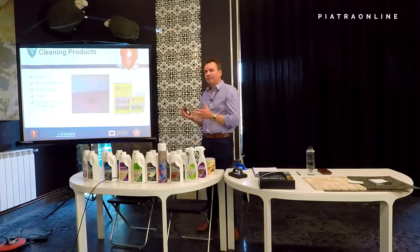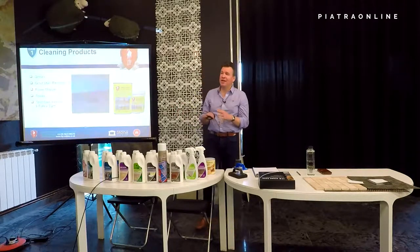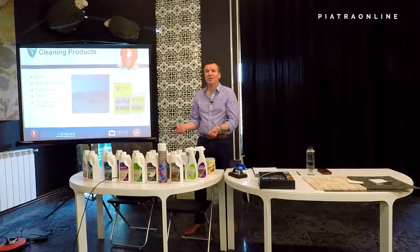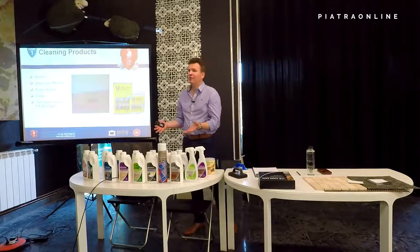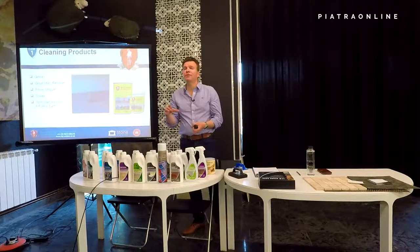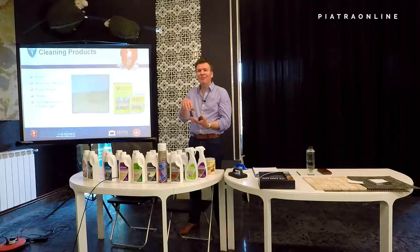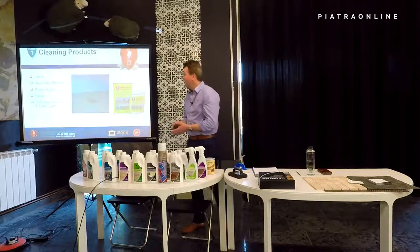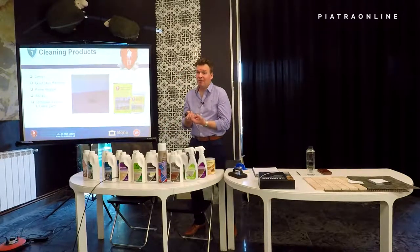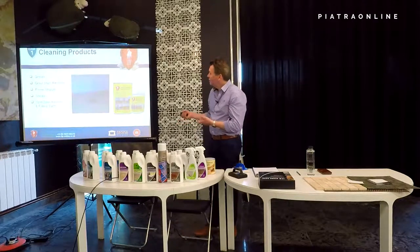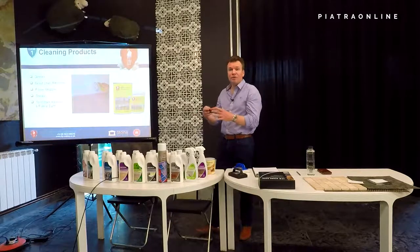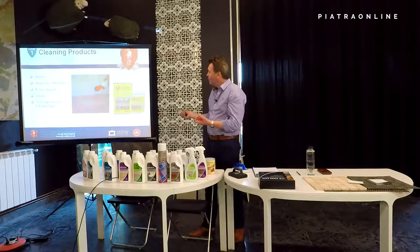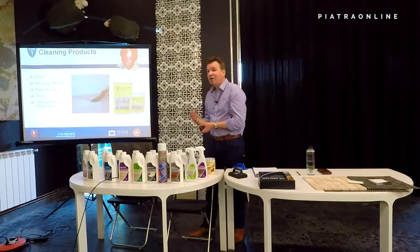Spot Stain Remover and Fuller's Earth are for removing hot oil issues, because there's no sealer on the market that will stop hot oil or grease from absorbing into stone. When you're cooking, oil gets to a very high temperature and that heat is enough to melt through any protection in place. If it happens, try to wipe it up as soon as possible. If you can't, it is possible to extract the oil back out of the stone. You pour the Spot Stain Remover onto the oil stain, allow it to absorb, then cover it with Fuller's Earth — an ultra-absorbent powder — and leave for two to three hours.